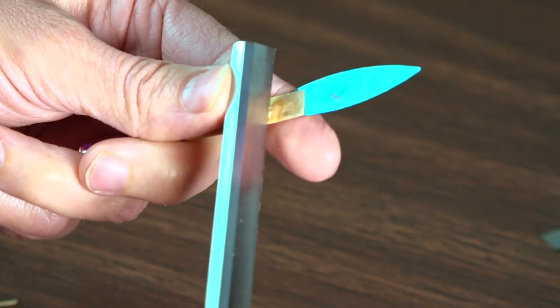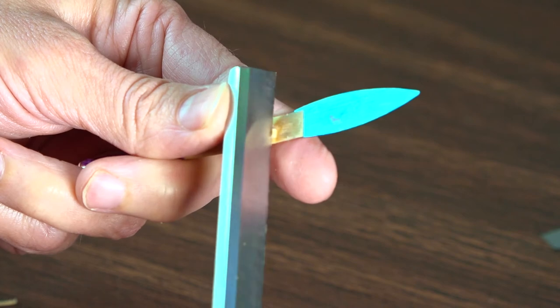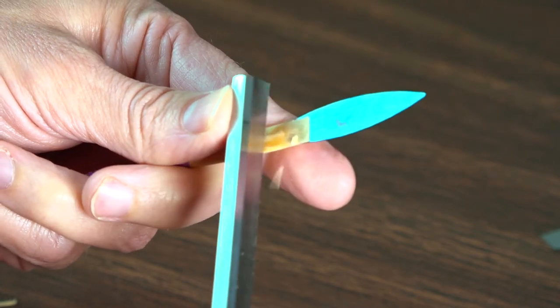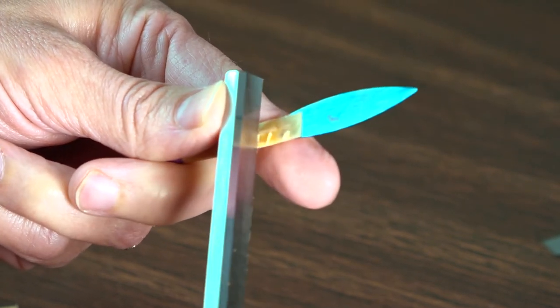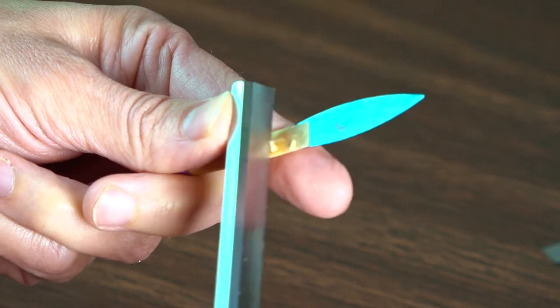After clipping the reed, check it to make sure it still seals well. Now you are ready to scrape the heart, which will be the thickest part of your reed. Scrape on either side of the spine using small strokes.